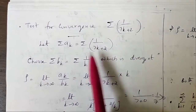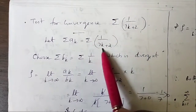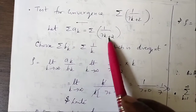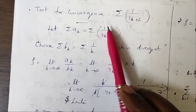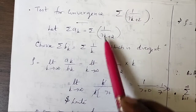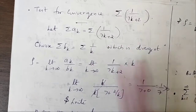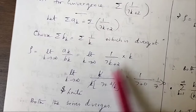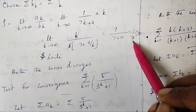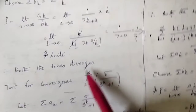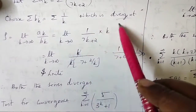Next: σ(1/(7k+2)). The dominant term in the denominator is k, so choose σbk = σ(1/k), which is a divergent series. Computing ρ gives a finite positive value, so both series behave the same. Since bk is divergent, the given series is also divergent.